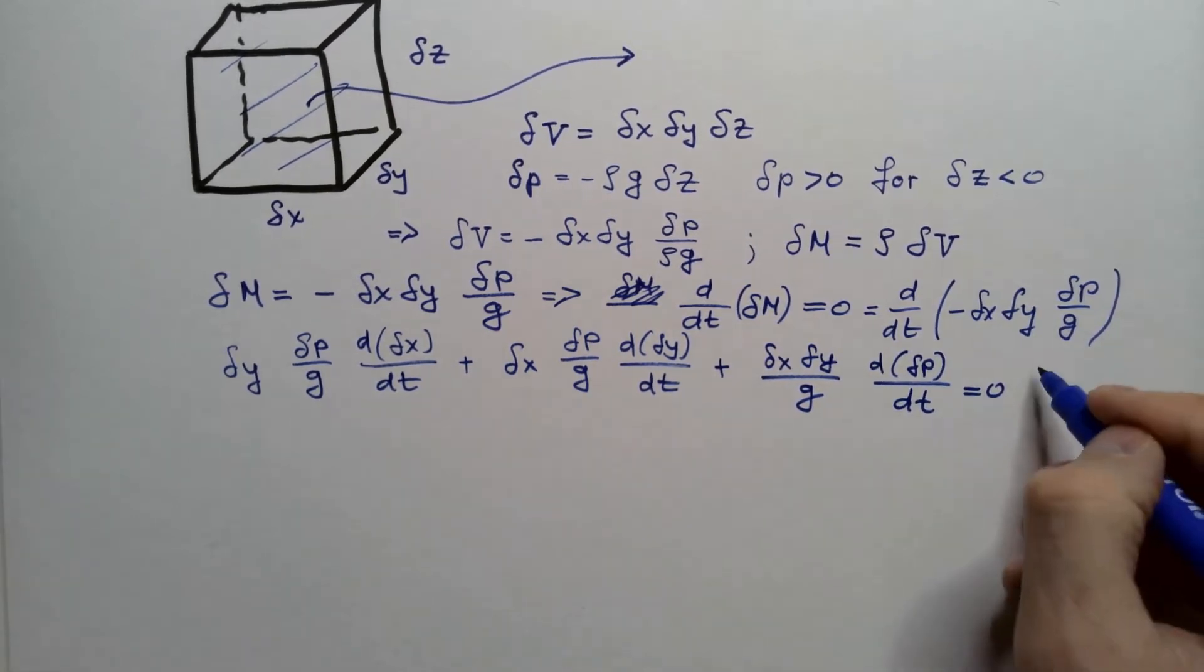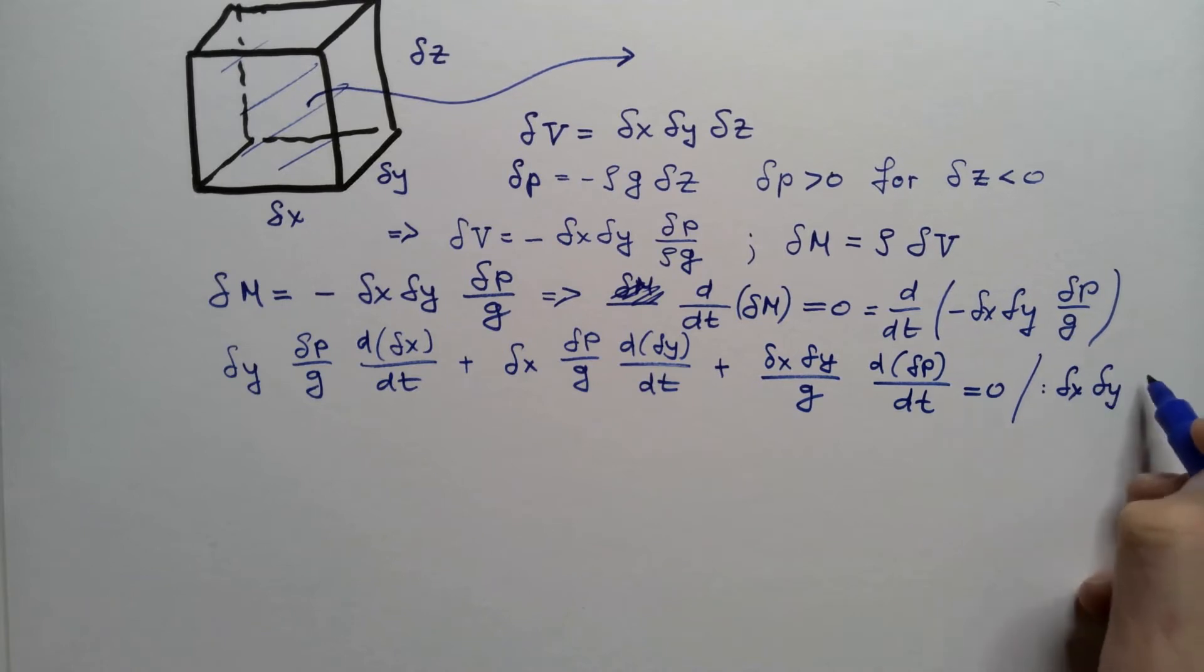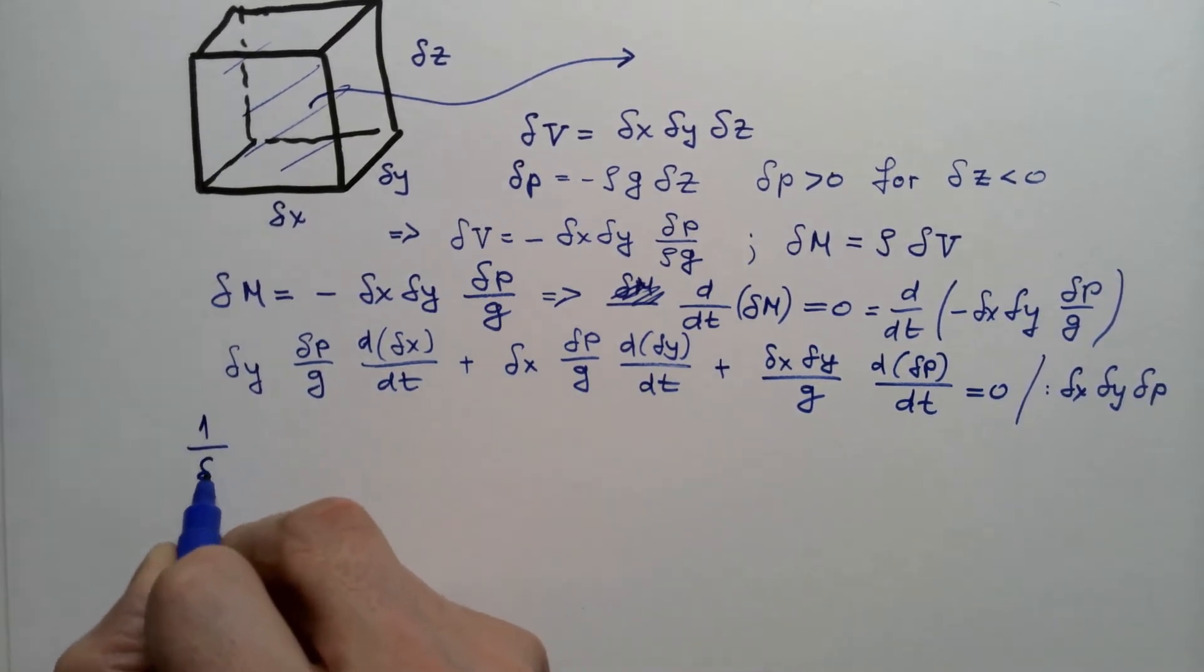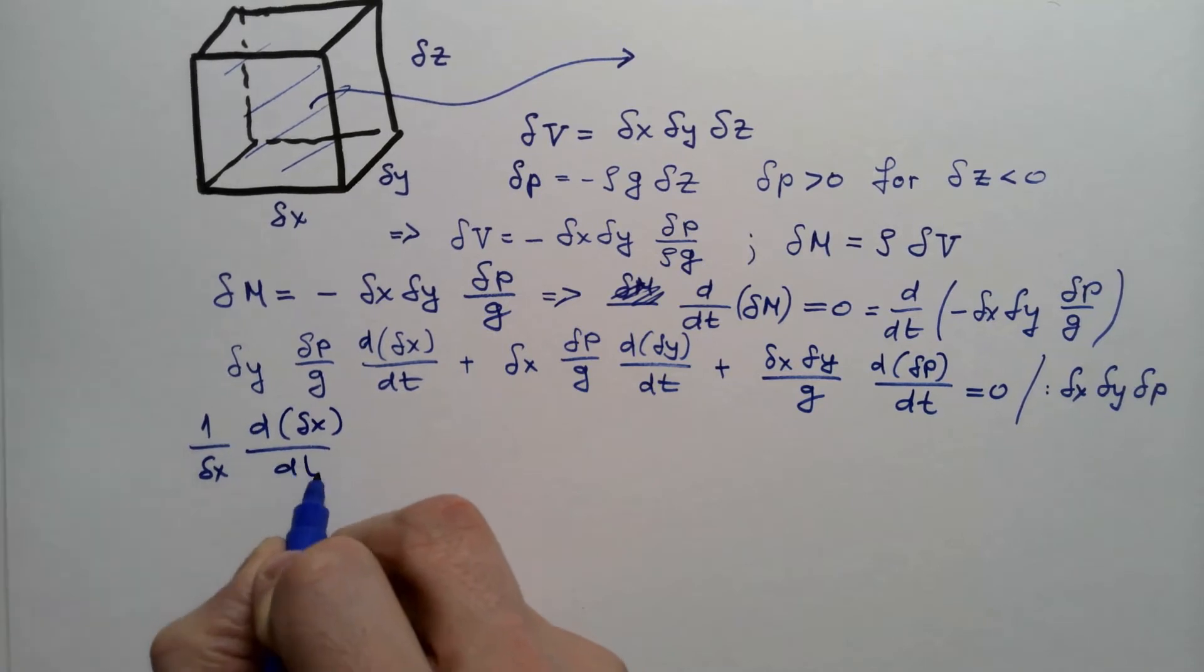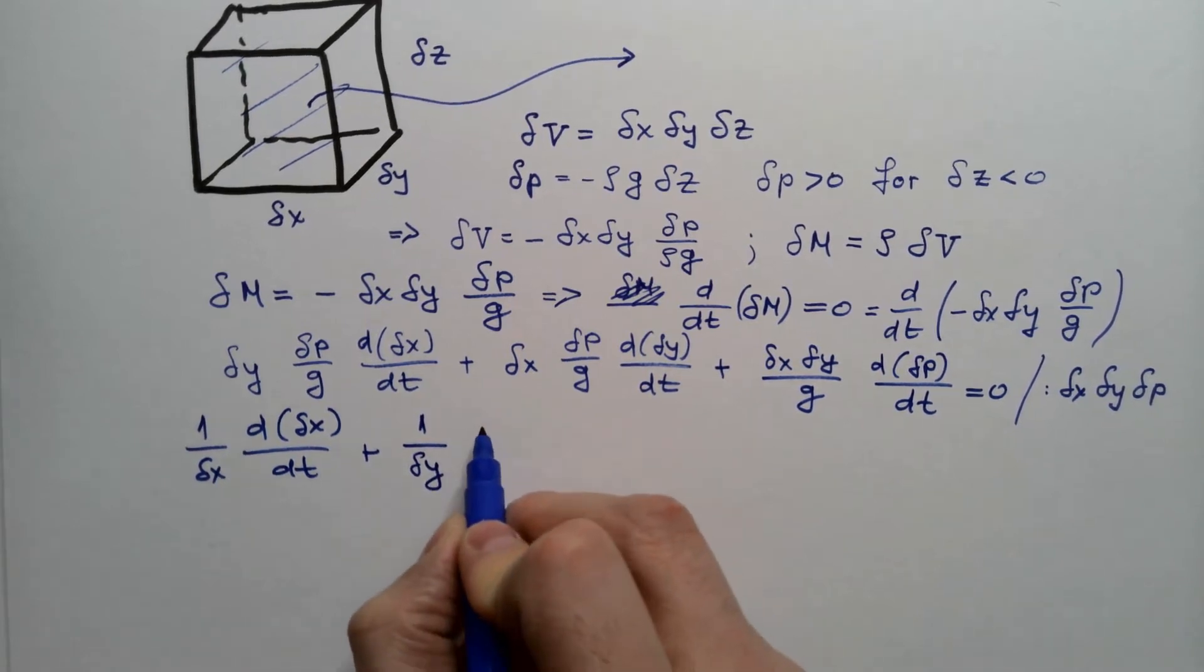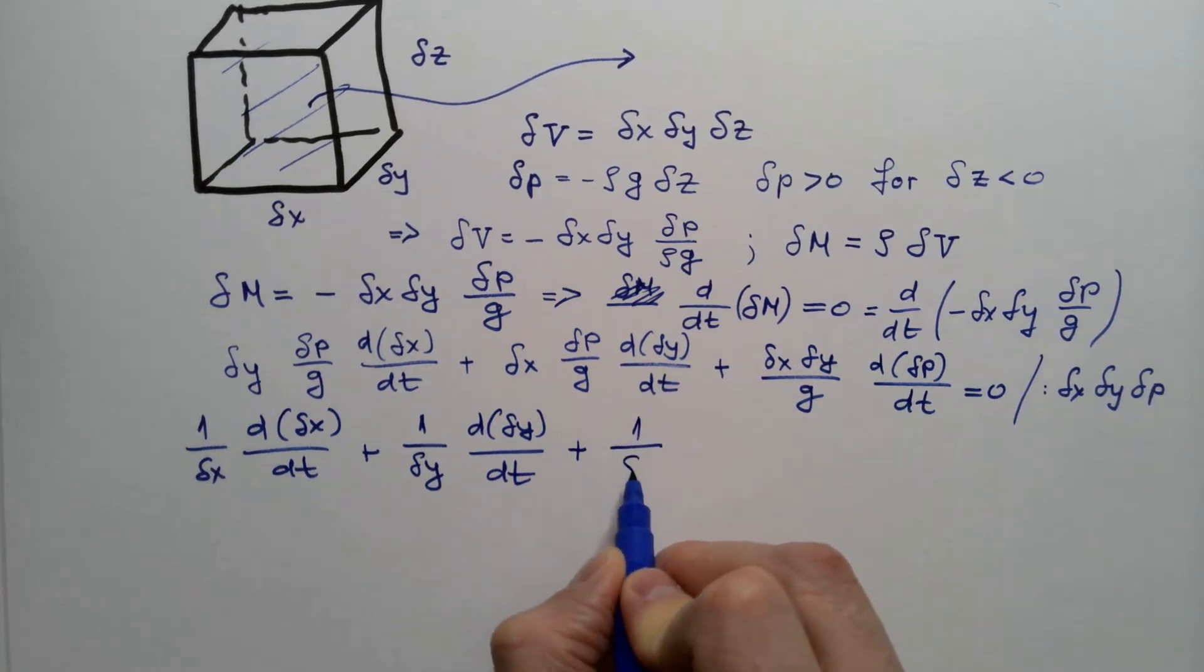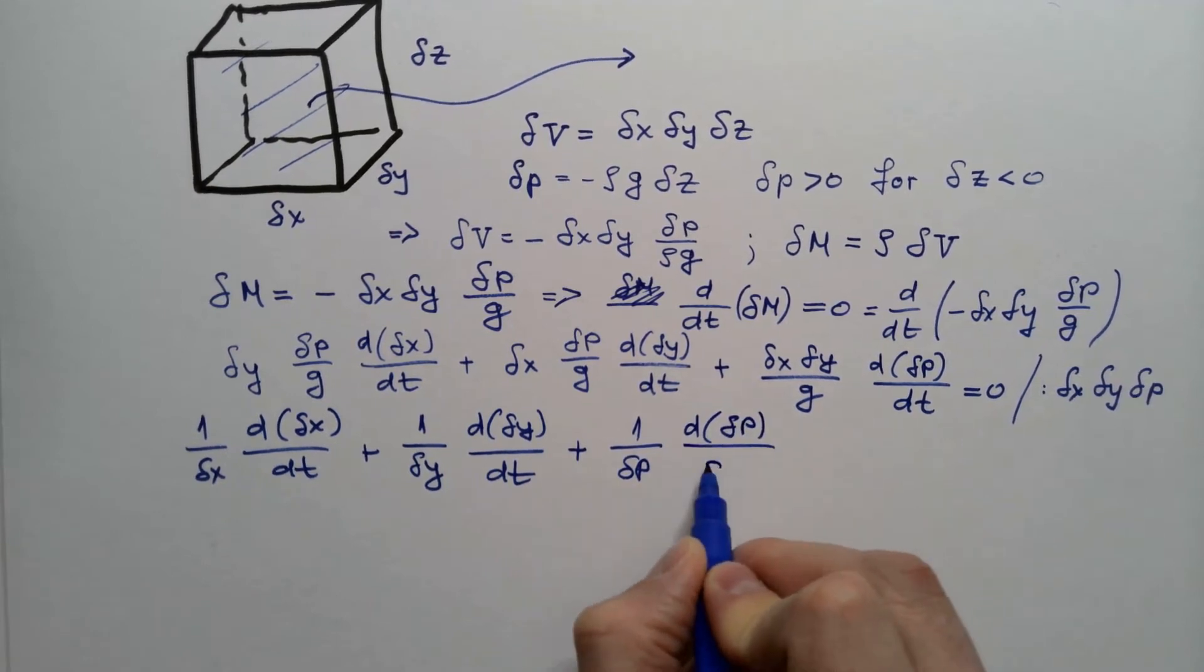Now I will divide the entire equation by delta x delta y delta p and also multiply by g. And that will give me one over delta x d delta x dt plus one over delta y d delta y dt plus one over delta p d delta p dt equals zero.